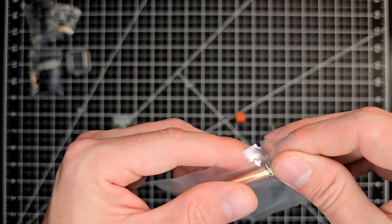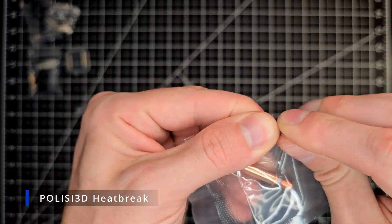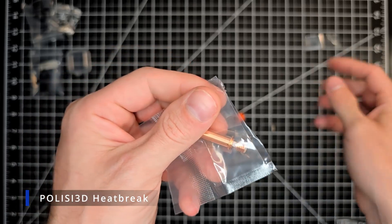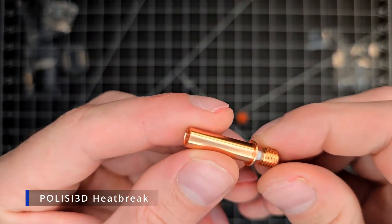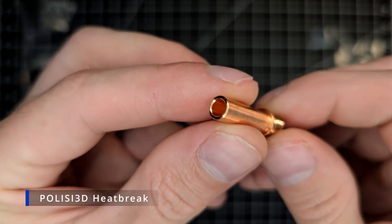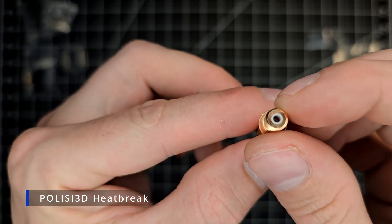We also have the Polyseed Heat Brake which will go into the top portion of the K1 Heat Sink after we drill out that hole to receive it. With the PTFE tubing cut to size in order to fit between the Heat Brake and Extruder.